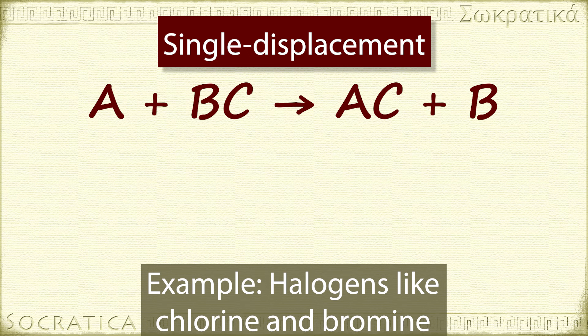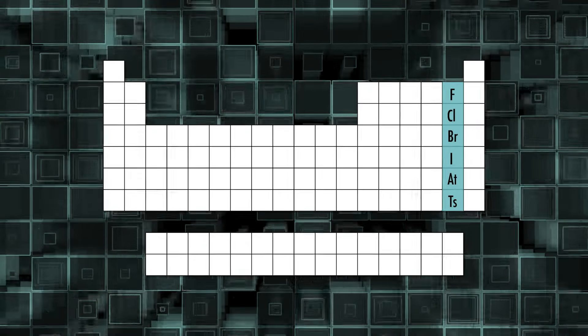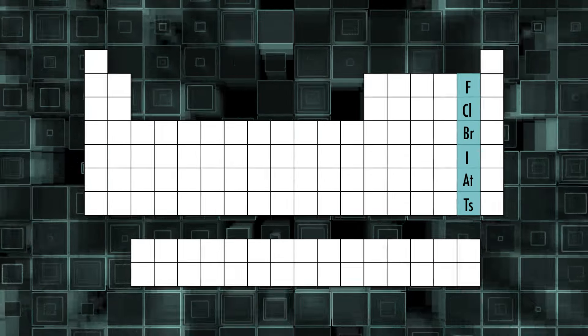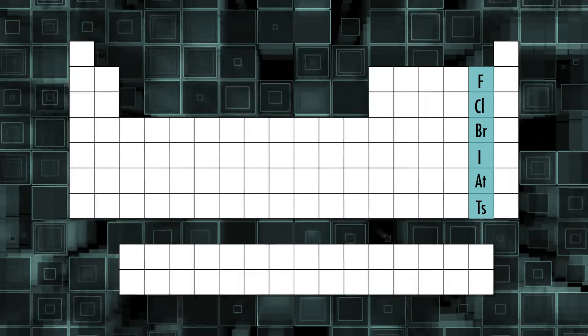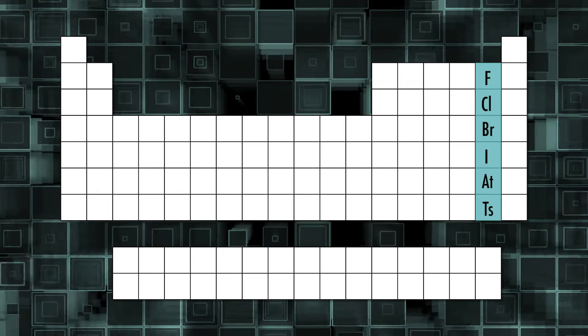Like the metal activity series, there is also a halogen activity series. And what makes it easy to remember is it's the same order as the halogens appear in the periodic table. Elements higher up in the column will replace elements below them.